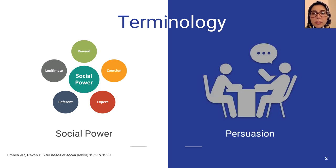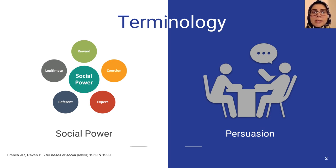And the other one is persuasion, which refers to an attempt to change or shape a target's belief or behavior about a subject, object, or matter. The similarity between these two concepts motivated us to investigate the effect of social power on persuasiveness of social agents.